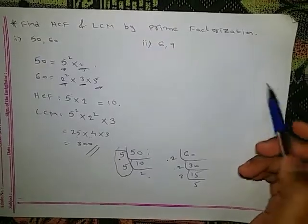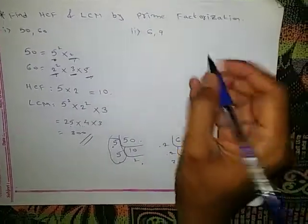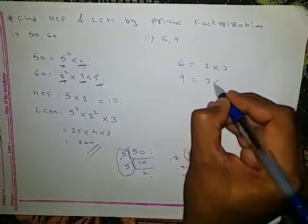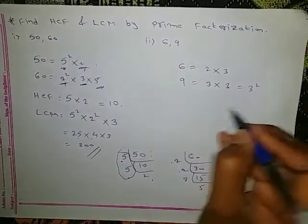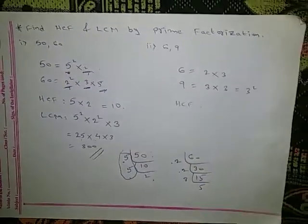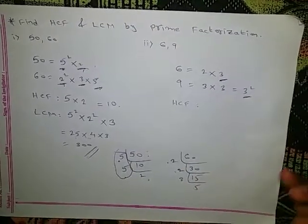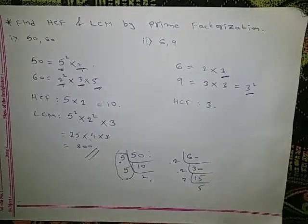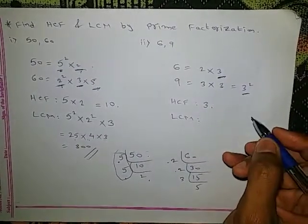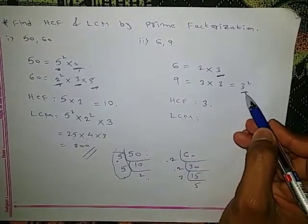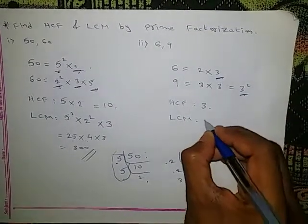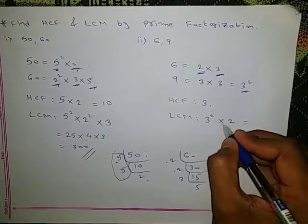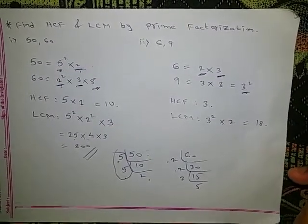Let's check one more: HCF and LCM of 6 and 9 by prime factorization. 6 = 2 × 3. 9 = 3 × 3 = 3². For HCF, take the common factor with the smaller power: 3 is in both, and 3 is smaller than 3², so HCF is 3. For LCM, check the common factors: 3 and 3² — take the greater, which is 3². The extra number is 2. So LCM = 3² × 2 = 9 × 2 = 18.